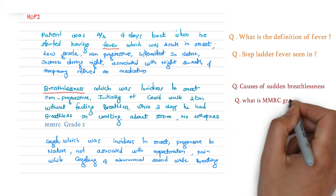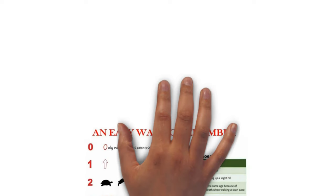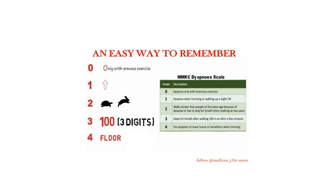What is the MMRC grading for breathlessness? Grade 0 is breathlessness only with strenuous exercise. Grade 1 is dyspnea when hurrying or walking up a slight hill. Grade 2 is walking slower than people of the same age due to dyspnea, or having to stop for breath when walking at own pace. Grade 3 is stopping for breath after walking 100 meters or after a few minutes. Grade 4 is too breathless to leave the house or breathless when dressing.